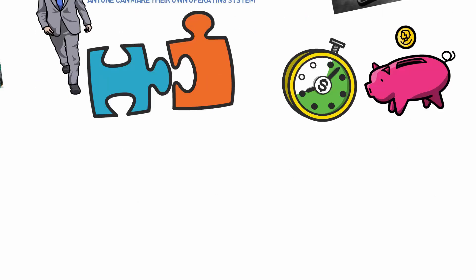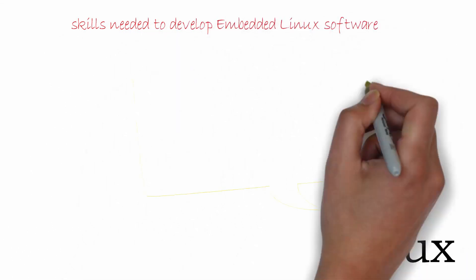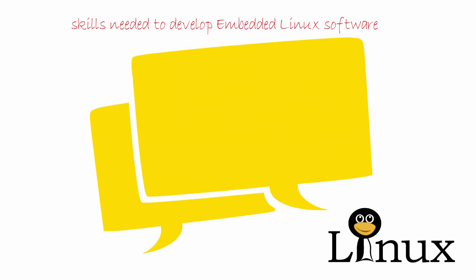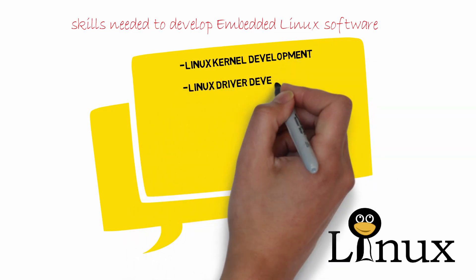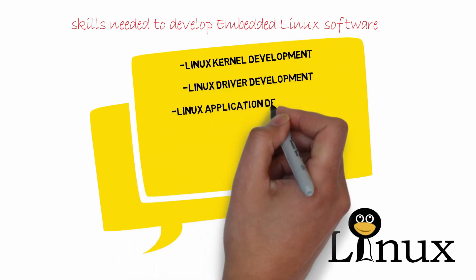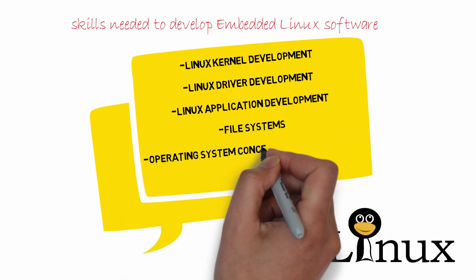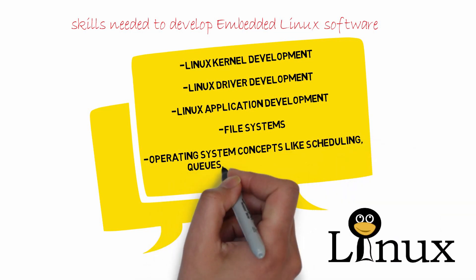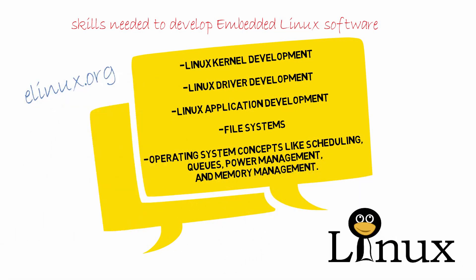What are the specific skills needed to develop embedded Linux software? Developing embedded Linux software requires knowledge about: Linux kernel development, Linux driver development, Linux application development, file systems, and operating system concepts like scheduling, queues, power management, and memory management. The elinux.org community recommends specific books to learn more about embedded Linux development.